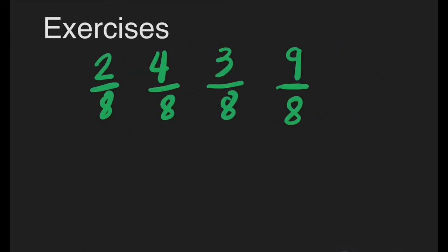Let us have some exercises. For the first set, we have 2 eighths, 4 eighths, 3 eighths, and 9 eighths. What fractions are they? Are they similar or dissimilar? The answer is similar because they have the same denominator. So they are called similar fractions.